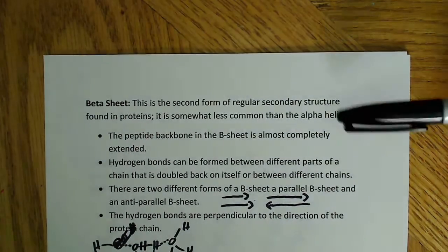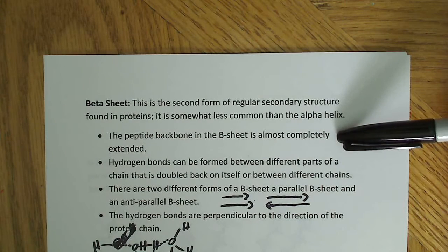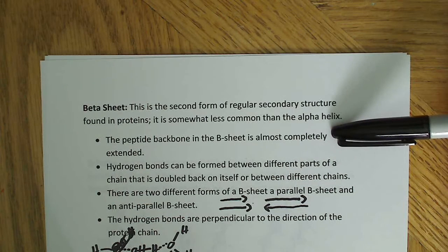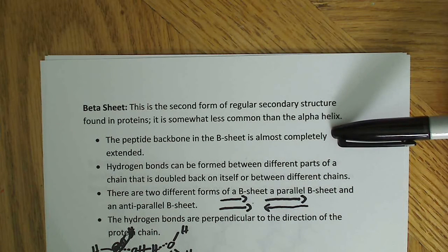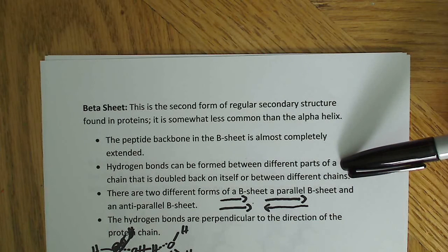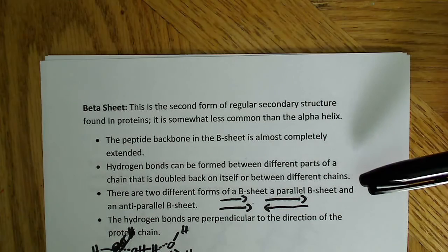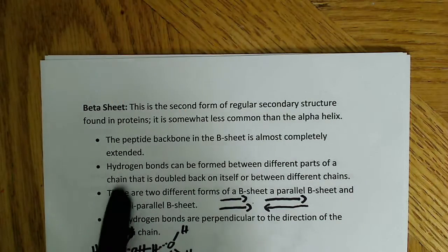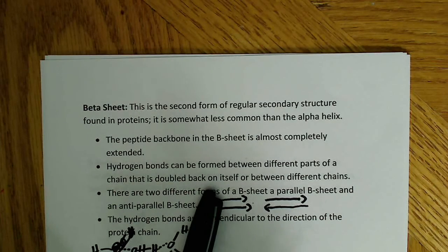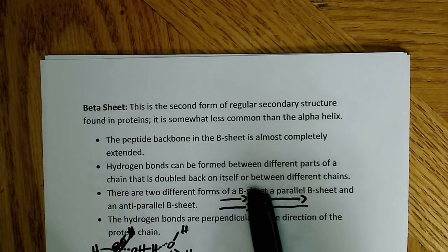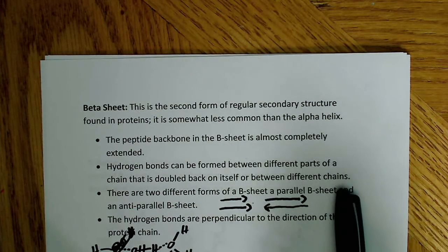I put a couple of bulleted points to demonstrate some of the important points about the beta sheet. The peptide backbone in the beta sheet is almost completely extended. Hydrogen bonding can be formed between different parts of a chain that is doubled-back on itself or between different chains. You can have the chain double-backed on itself and form hydrogen bonds, or the more common way is hydrogen bonding between different chains.